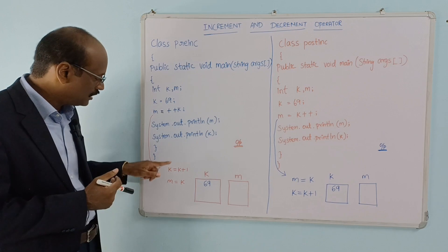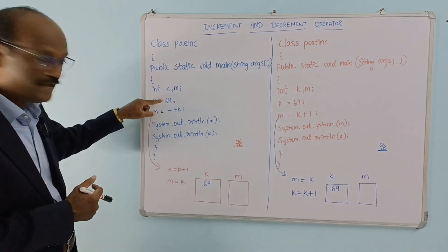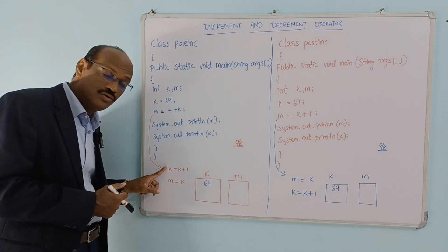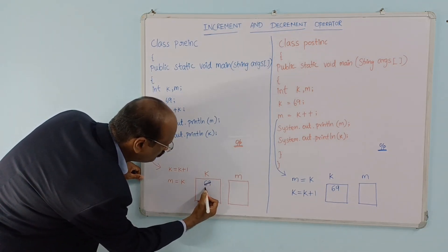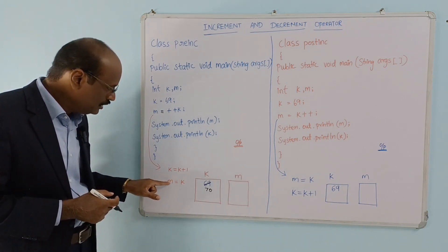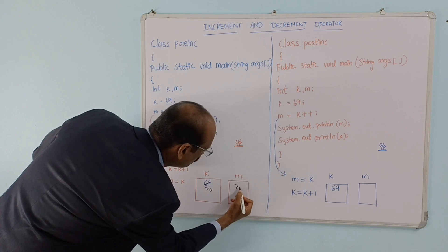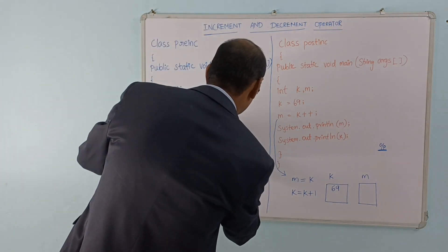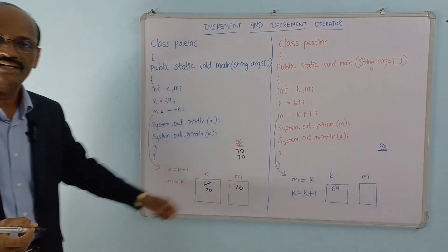So k will be incremented by one. 69 will be incremented by one — so k becomes 70. In the statement, k will hold the latest value, so m equals the latest value. The latest value is 70, so m equals 70. If you print m, the value is 70; k is also 70.